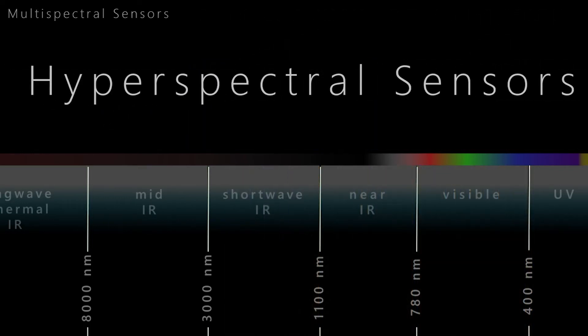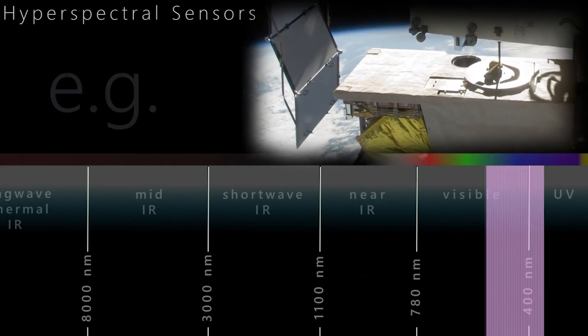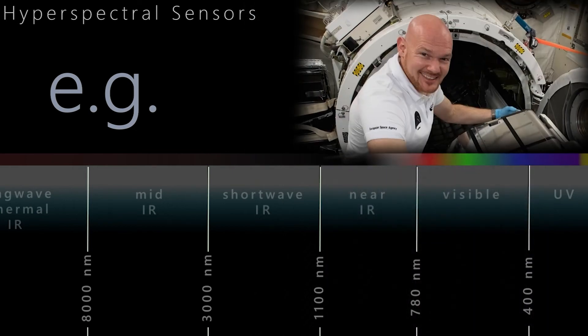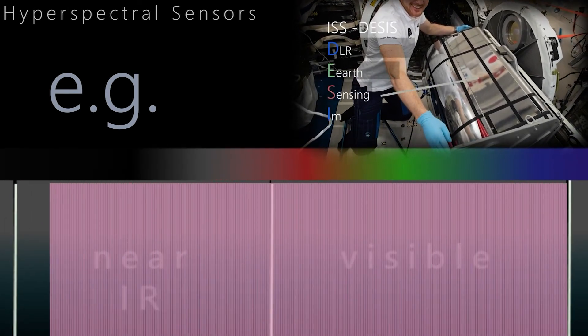Modern hyperspectral sensors are about to close these gaps. Hyperspectral sensors have several hundred channels and thus a very high spectral resolution. They continuously cover a much larger range of the electromagnetic spectrum, but to get this technology into space is complicated. Therefore, sensor systems such as the ISS DESIS, which observes the Earth in 240 channels in the visible and near-infrared range, are still pioneers in this field.